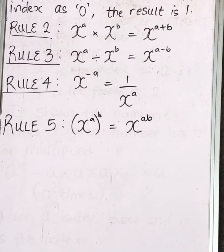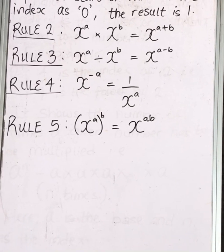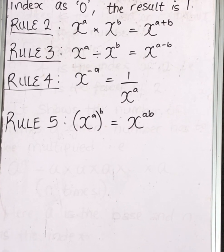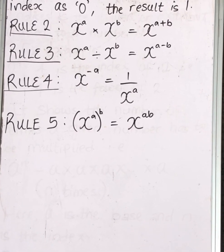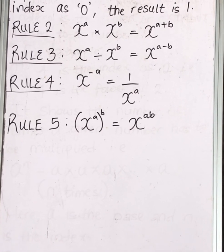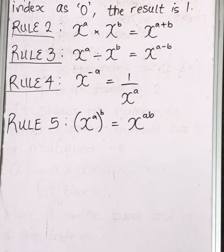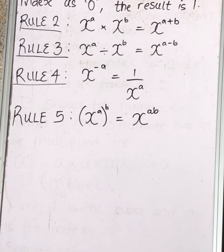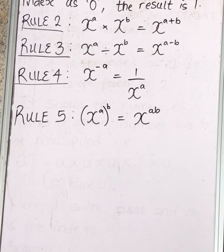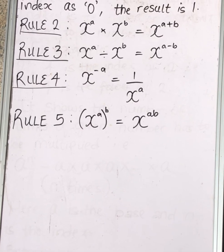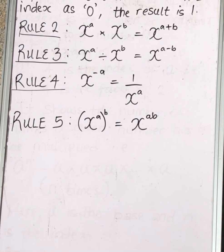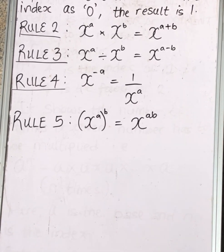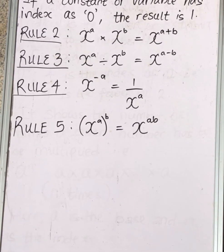Rule number five says anything raised to the power of something, also raised to the power of another thing, will give you the multiplication of those powers. So X raised to power A, also raised to the power B, will give you X raised to the power of A times B. That's very straightforward.